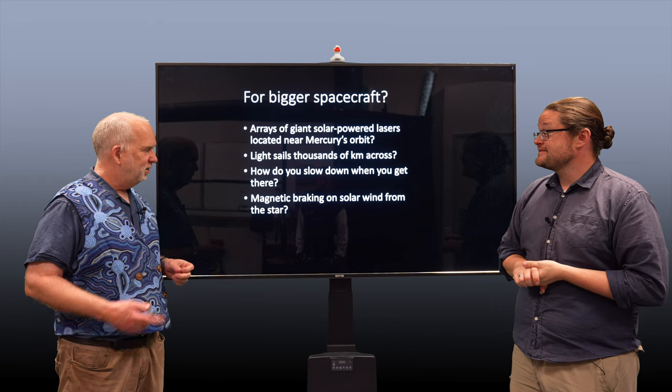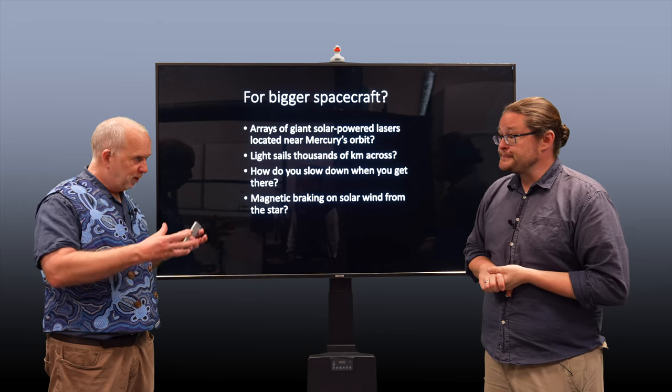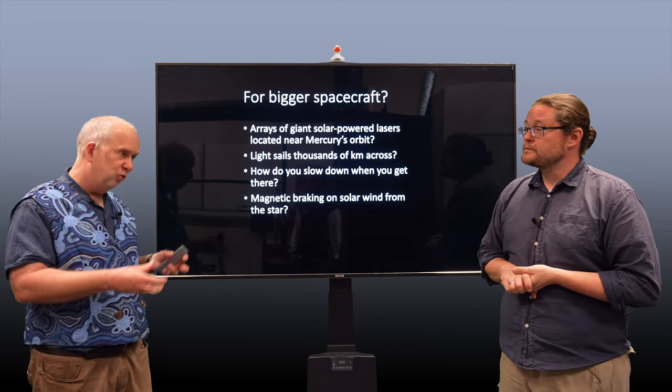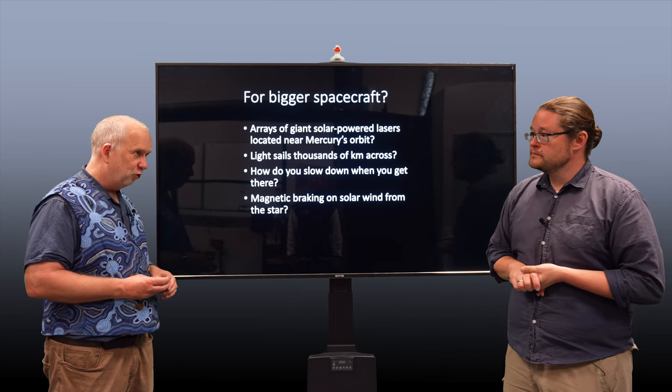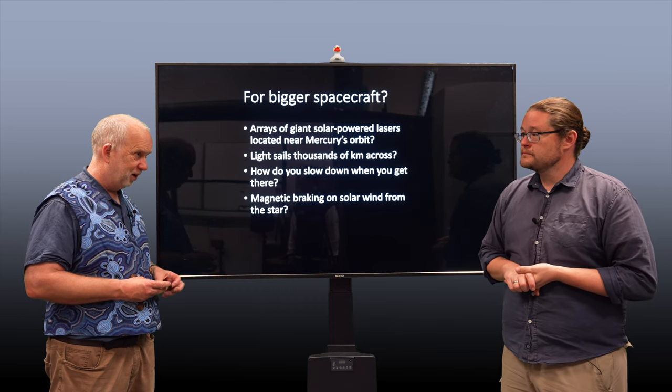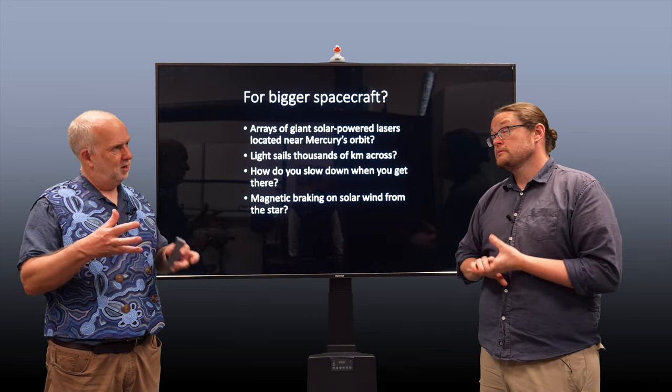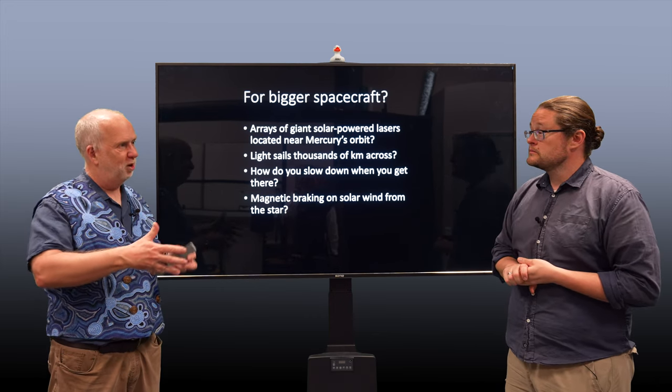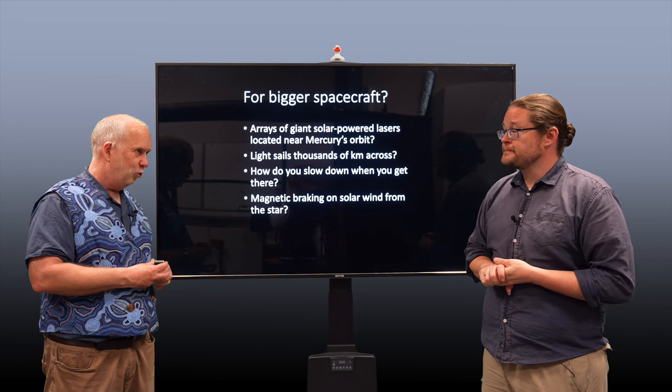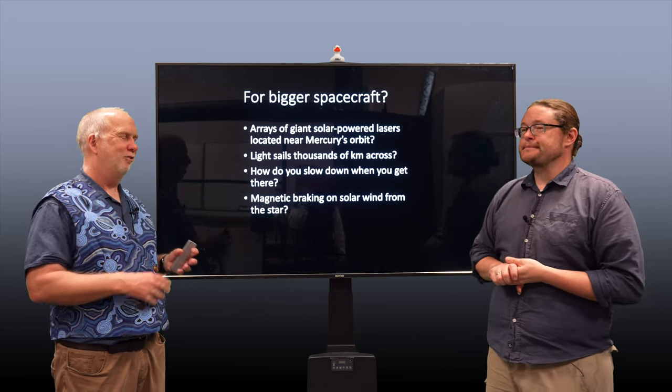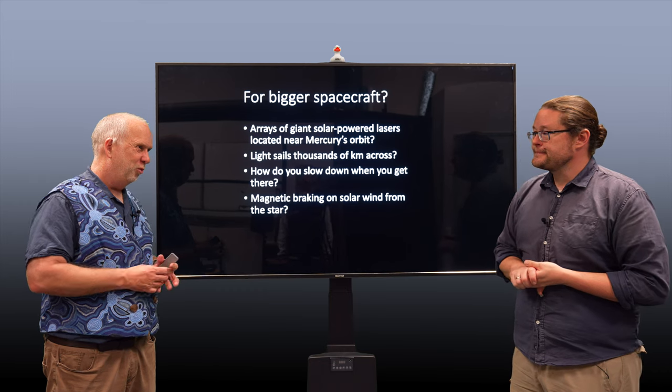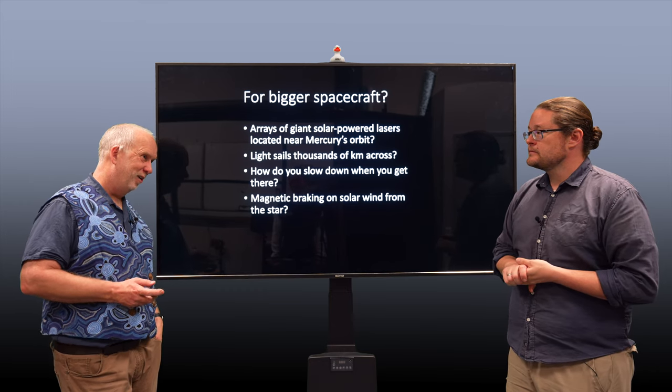One possibility is to use magnetic braking. We've talked about using the light from the sun, but you can also use the wind from the sun. It's not as much oomph as the light from the sun, but in principle, you could just have a big magnetic field around your spacecraft and the particles get trapped in that. So maybe you could use it like an aerobrake where you extend a giant magnetic field and slow down off the solar wind from Proxima Centauri.